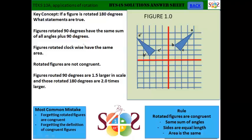The first statement is: figures rotated 90 degrees have the same sum of all angles plus 90 degrees. This statement is false since the sum of all the angles is going to be the same regardless of how much you rotate it.